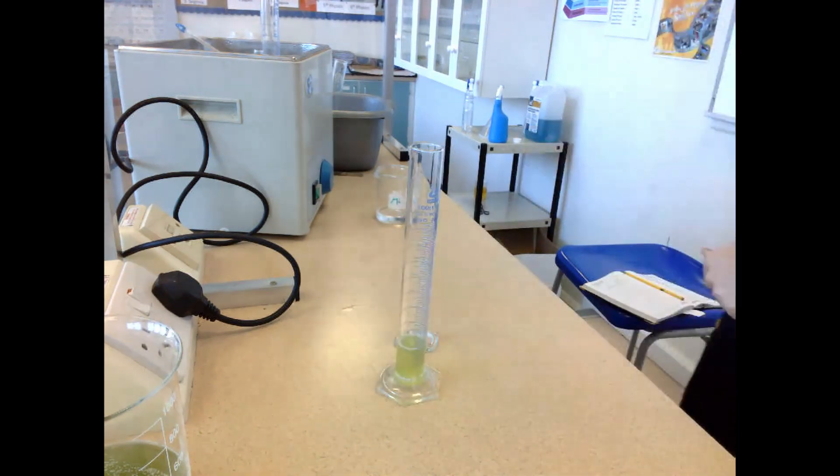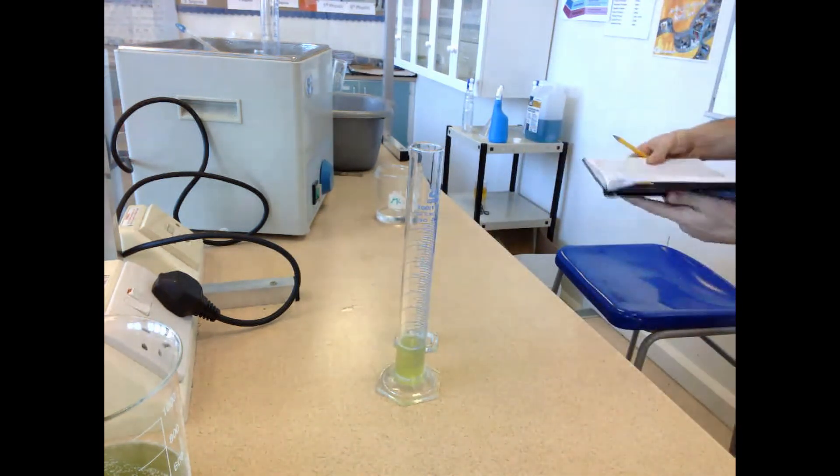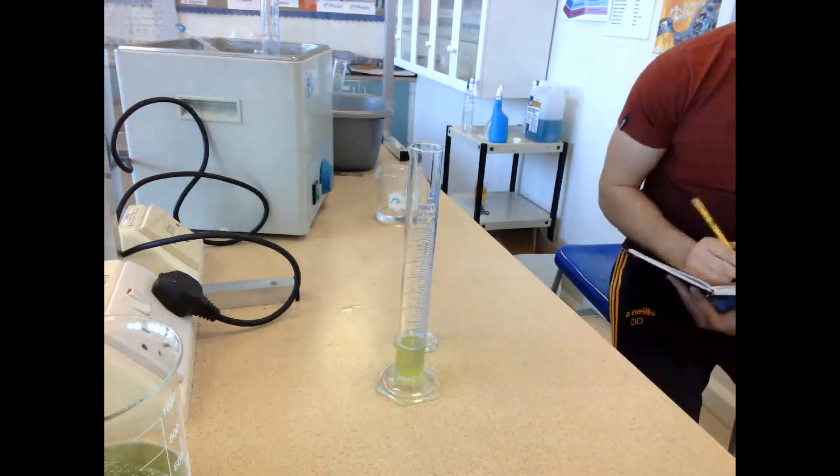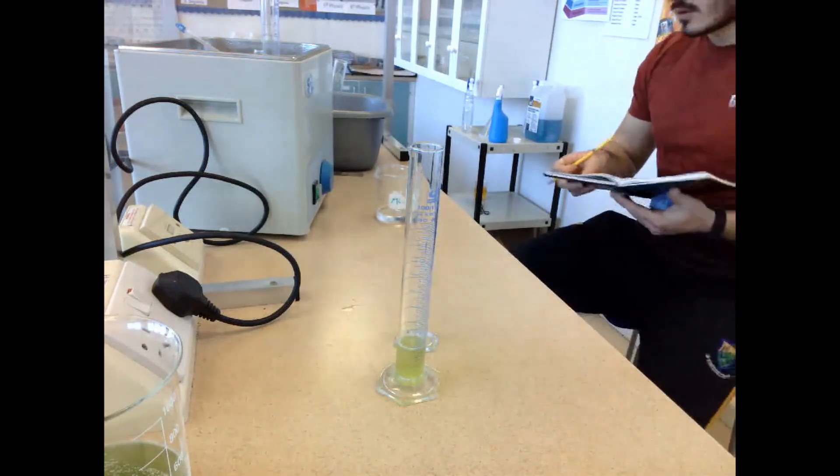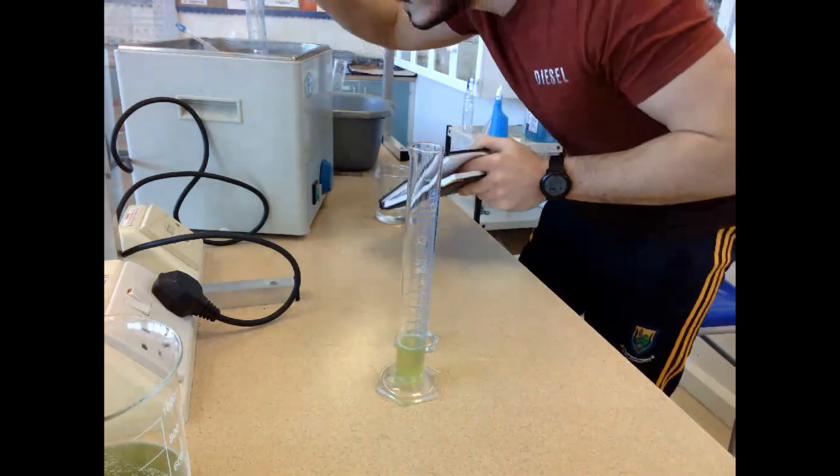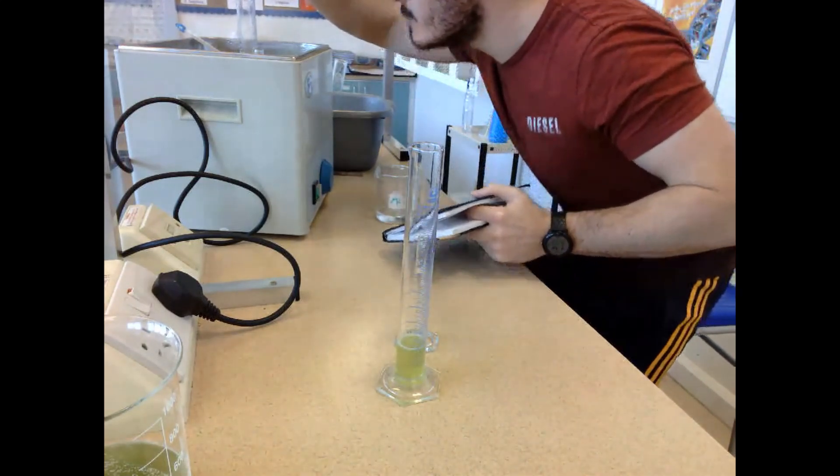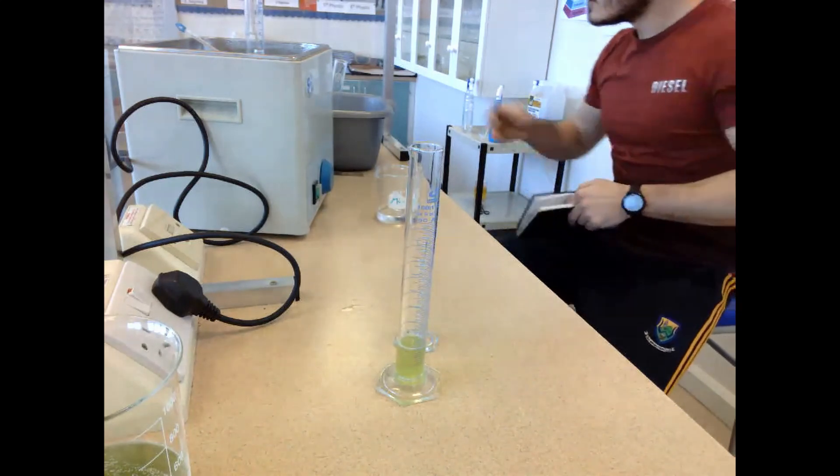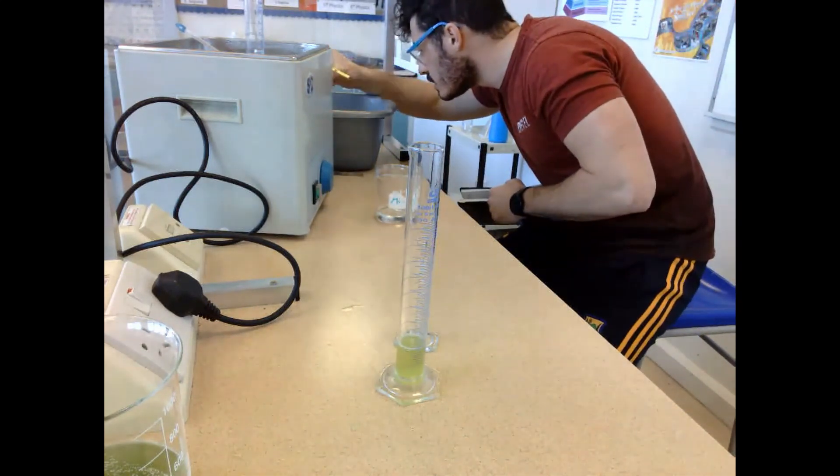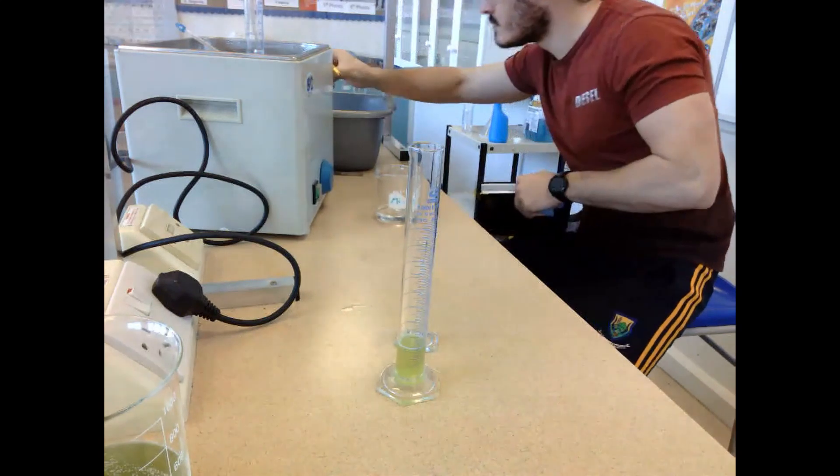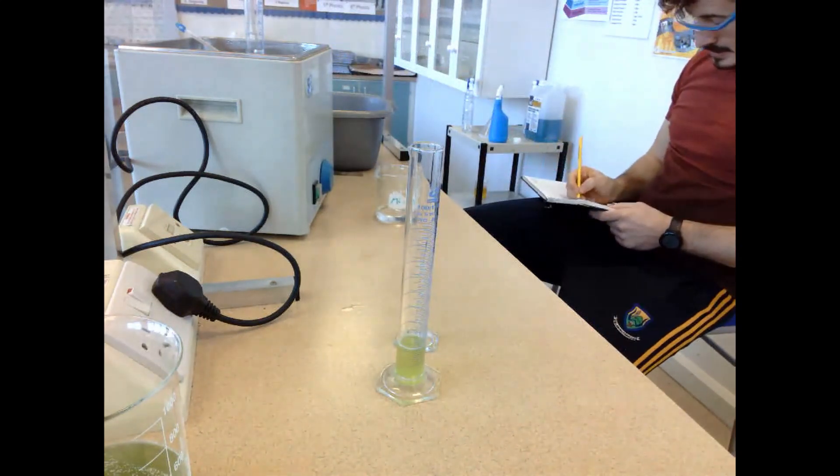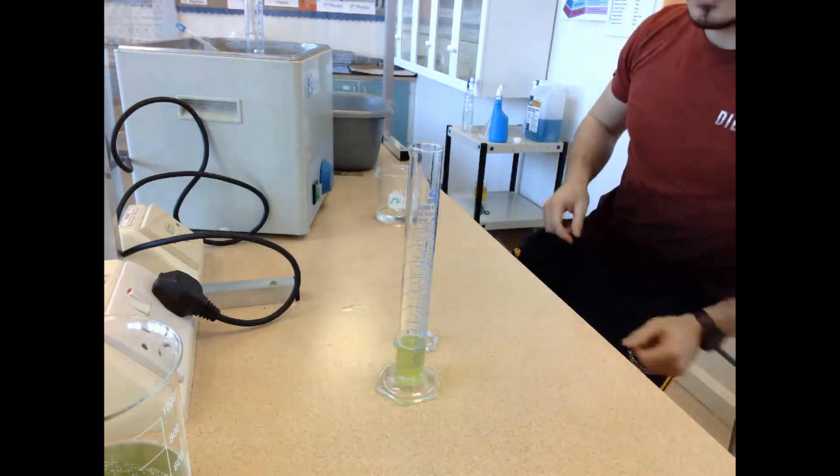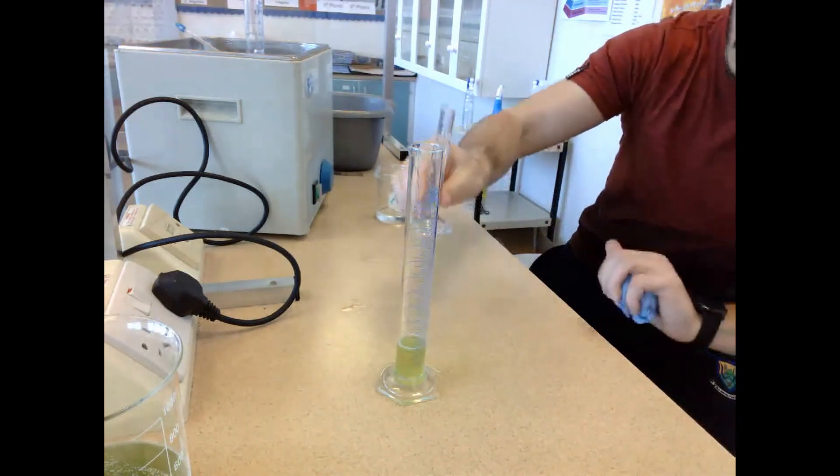Before starting, I noted the initial volume of each graduated cylinder, accounting for the 10 milliliters of hydrogen peroxide to be added. I repeated this for the hot water bath and ice bath cylinders. This allows me to subtract the initial volume from the final foam volume to measure enzyme activity.